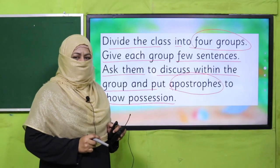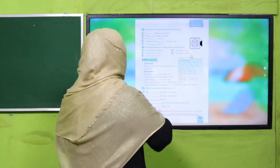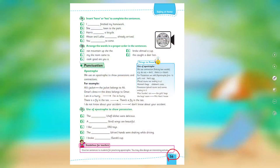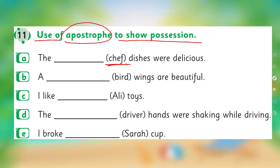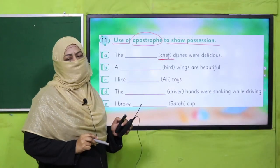Are you done with it? Good job! Now it's time to practice from your book. Open your book on page number 56, question number 11 — 'Use of apostrophe to show possession.' These are the nouns; you have to show their possession by using an apostrophe. Pause the video, complete this task in your book, and then come back.